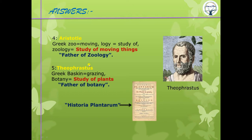The father of botany is Theophrastus. Botany comes from the Greek word 'baskin' meaning grazing, and botany is the study of plants. Theophrastus wrote the book Historia Plantarum, describing 480 plants, and studied seed germination, metabolism, plant reproduction, growth, and morphological features.